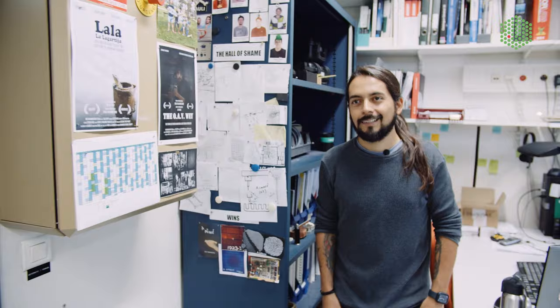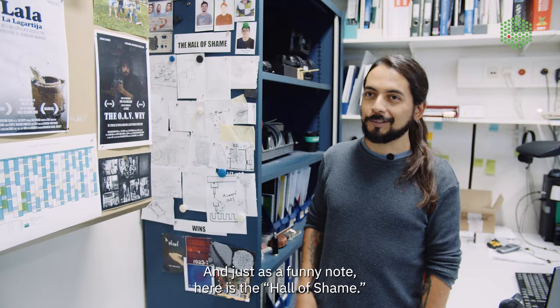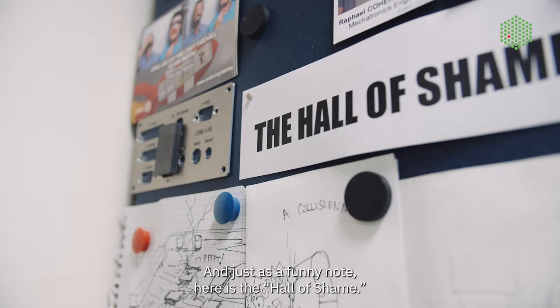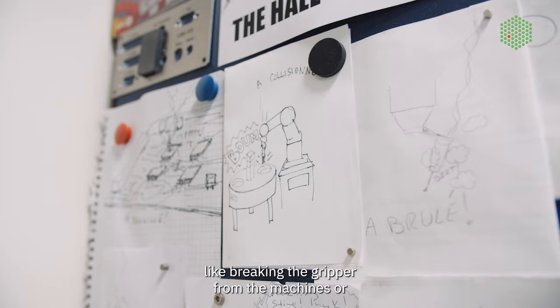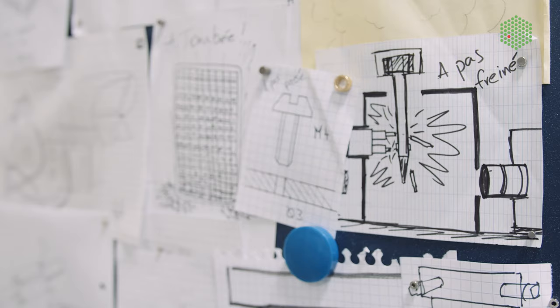So this is my office in the electronics lab. And just as a funny note, here is the hall of shame. So every time we make a mistake, we break something or we burn something, we have to make a drawing and put it on the board. Like breaking the gripper from the machines or burning motors.